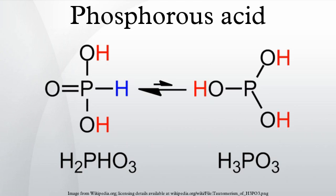Acid-base properties. Phosphorus acid is a diprotic acid, since the hydrogen bonded directly to the central phosphorus atom is not readily ionizable. Chemistry examinations often test students' appreciation of the fact that all three hydrogen atoms are not acidic under aqueous conditions, in contrast with H3PO4, phosphoric acid. The hydrogen phosphonate ion, HPO2(OH)−, is a moderately strong acid.